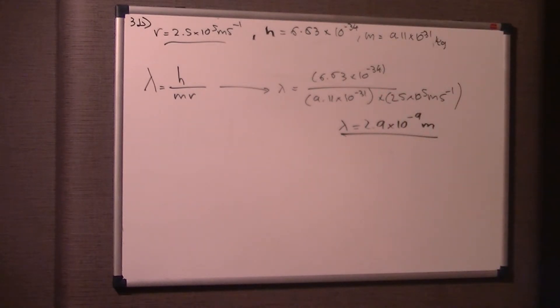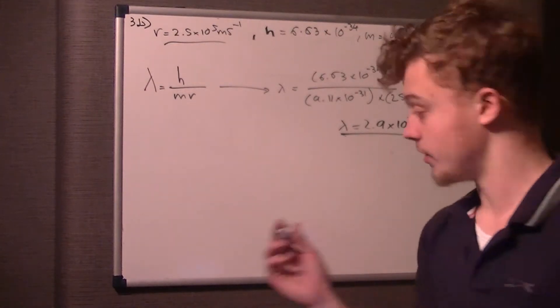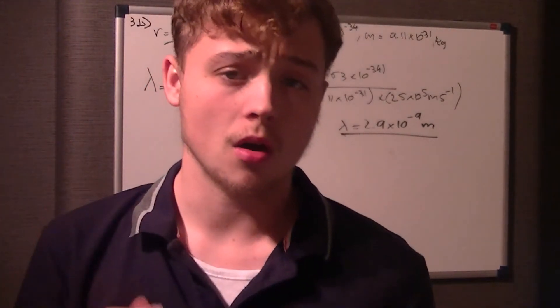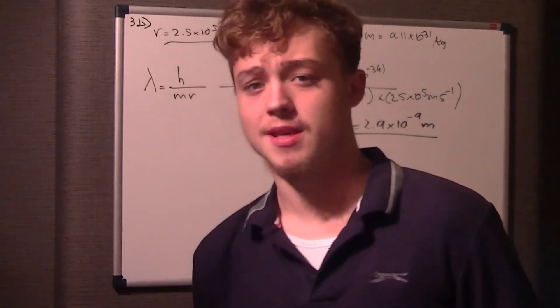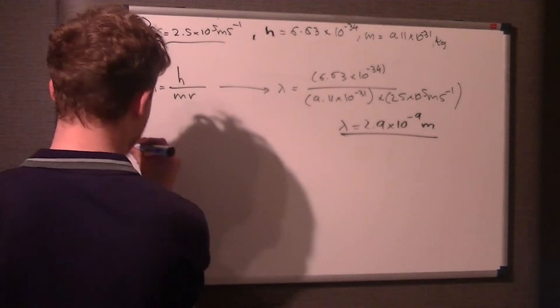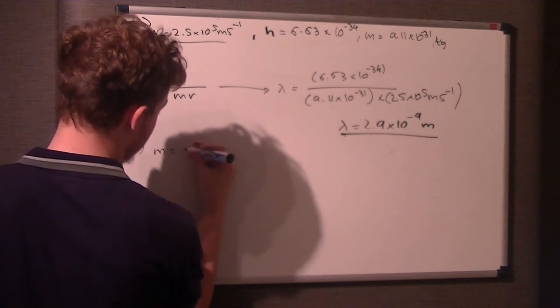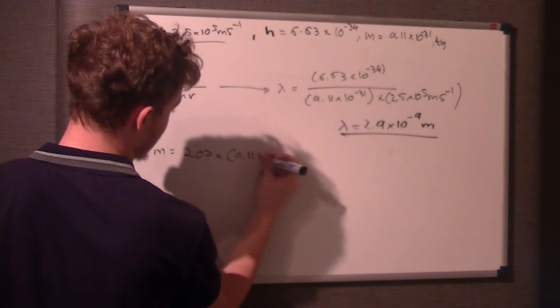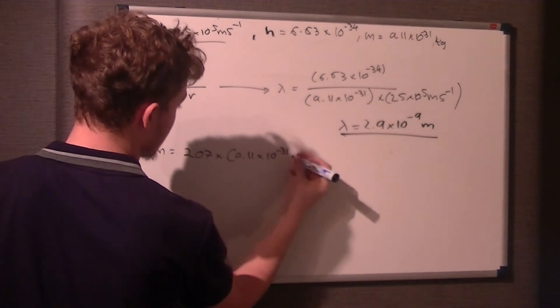Now 3c says the speed of the muons, which is just a heavy electron, has the same wavelength as these electrons. What speed is it traveling at? The mass of a muon is 207 times the mass of the electron. So the mass m equals 207 times 9.11 times 10 to the minus 31 kilograms.